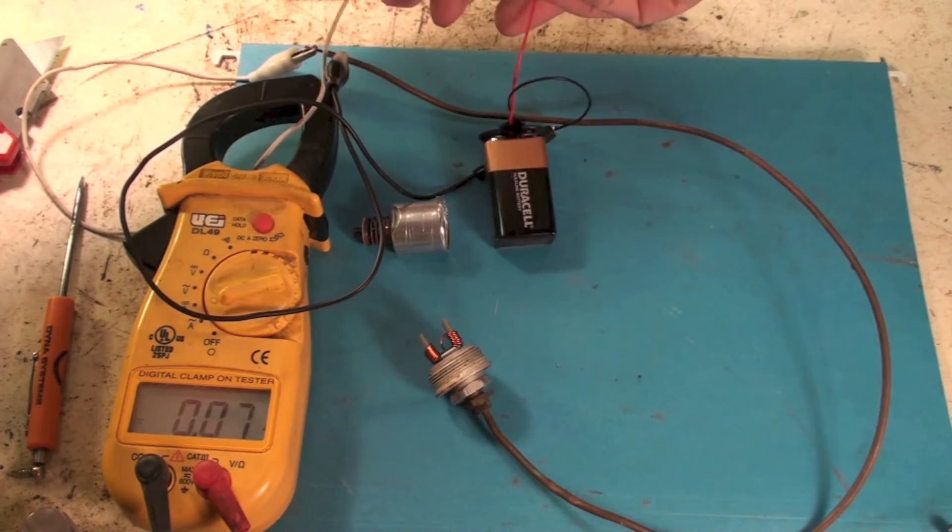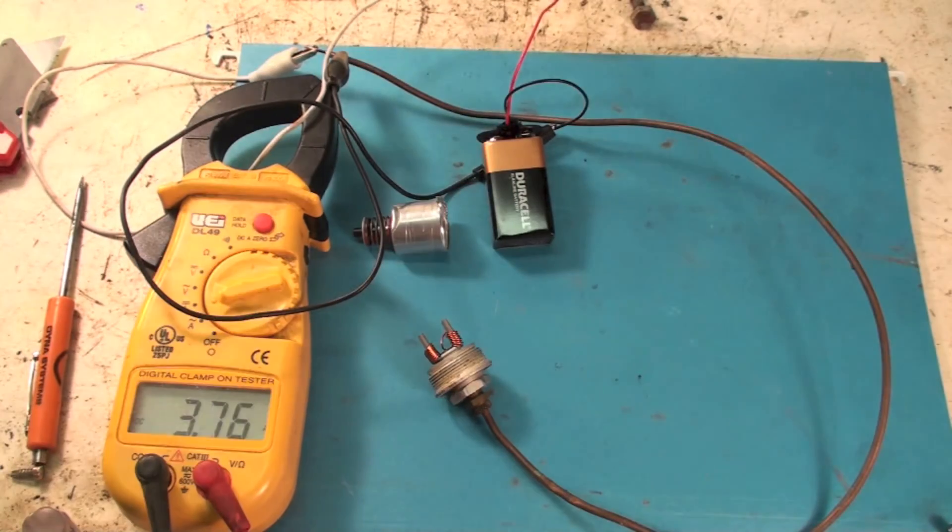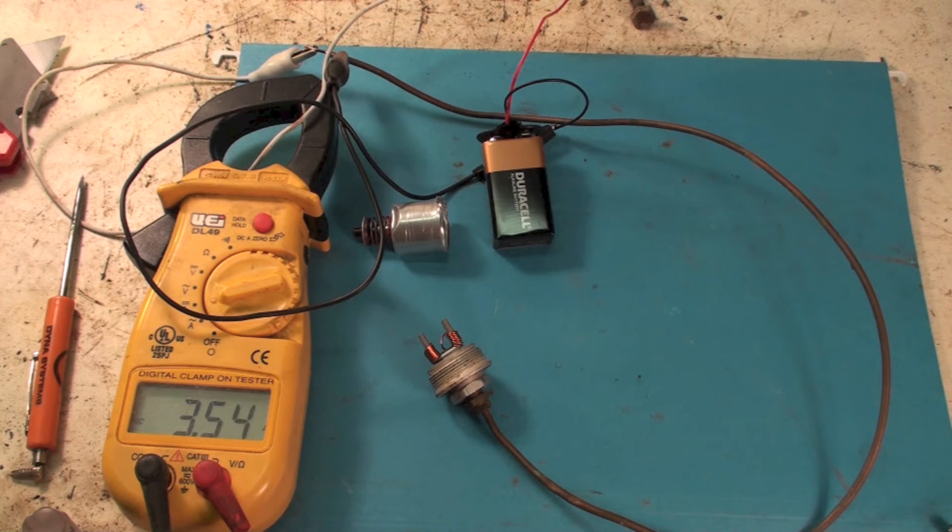The nine volt battery is showing nine point three volts. Now we are showing three amps, well it's dropping down to three amps, but it is drawing a fair amount of amperage here. And I'm gonna let this thing pull down for a little while.